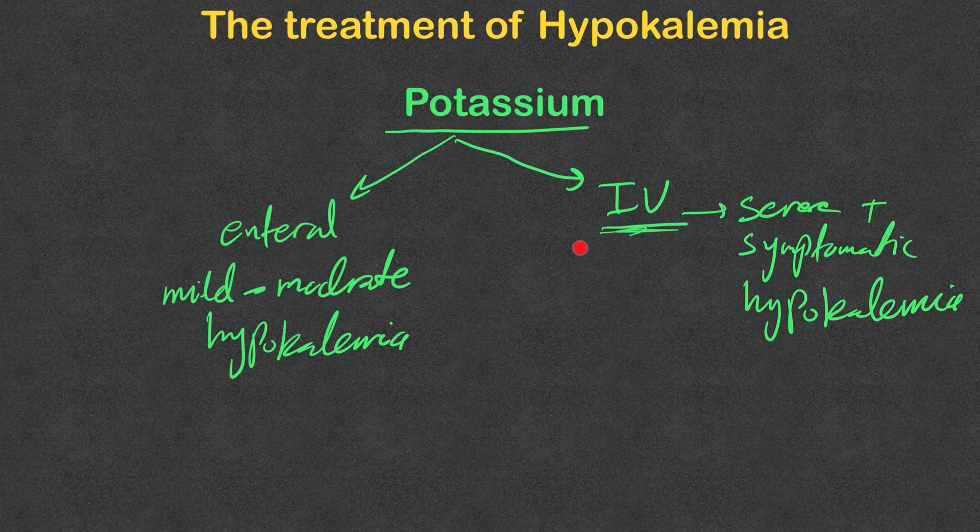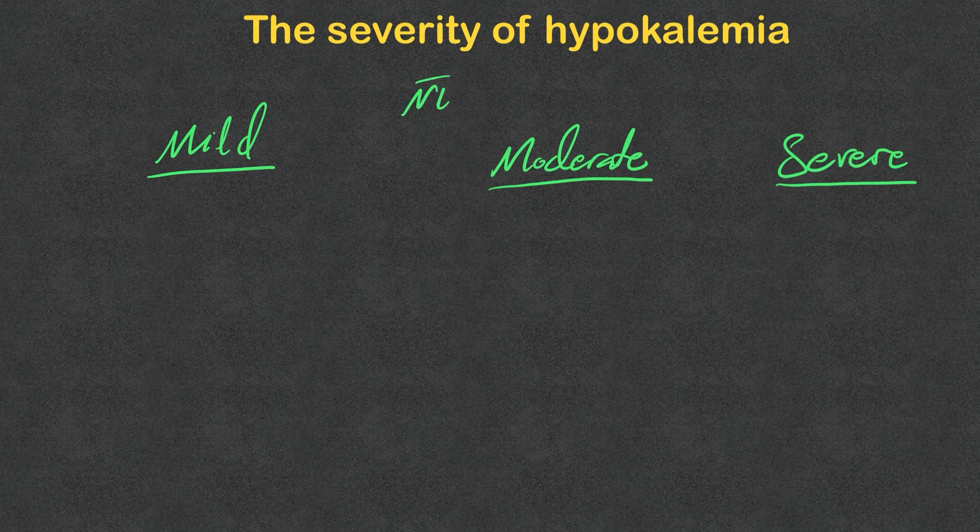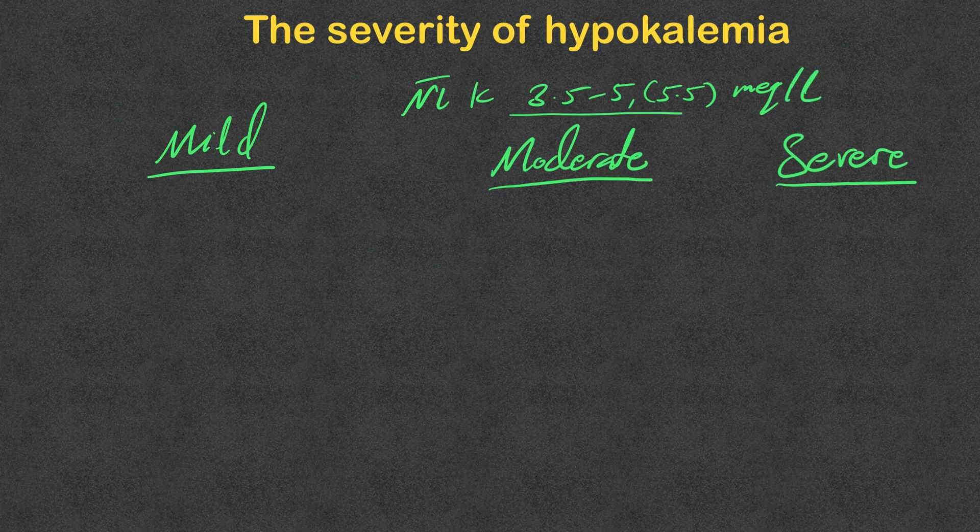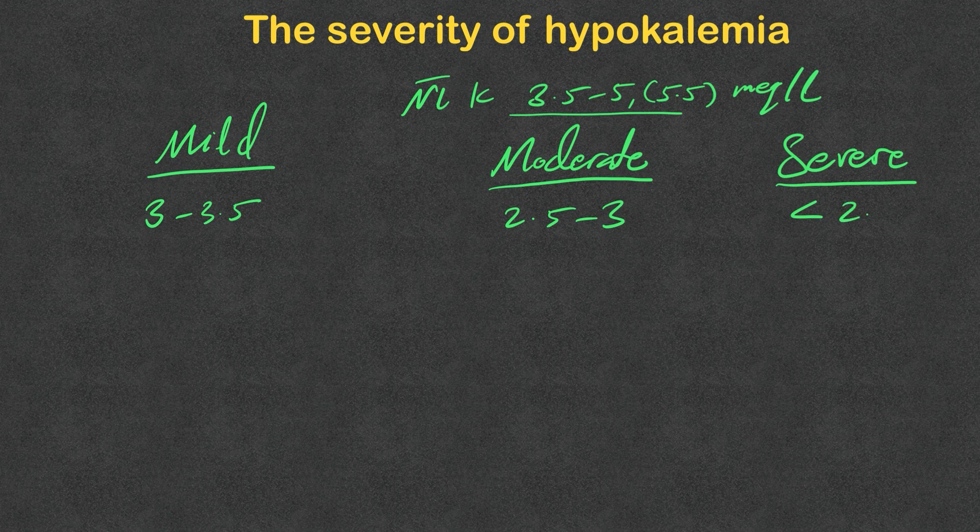As you know, normal potassium level is 3.5 to 5, or some institutions use 5.5 milliequivalents per liter. Based on that, any potassium between 3 to 3.5 is considered mild, 2.5 to 3 considered moderate, and anything less than 2.5 considered severe.